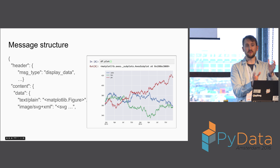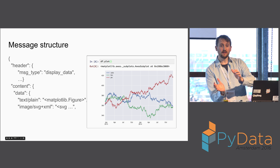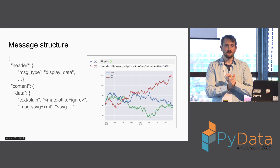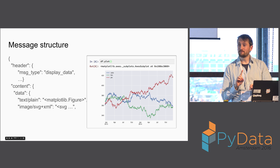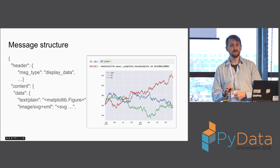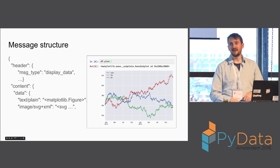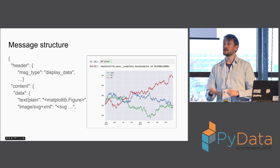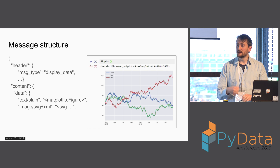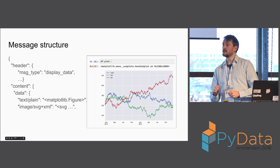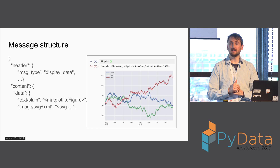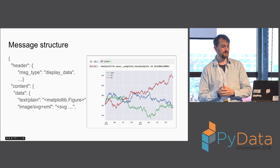A MIME bundle is a dictionary keyed by MIME type saying these are all representations of the same object. Then the front end says: I understand text, I can always display text. But I really like SVGs, so if there's an SVG I'm going to pick that instead of text. Different front ends have different display priorities. One interesting example is the Qt console, which is another front end for the same Jupyter kernels. It understands many formats, but some it doesn't implement very well, so it has a different display priority than the interactive notebook.